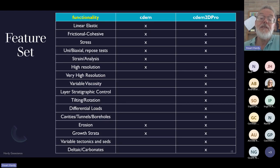The feature set - where this is the bells and whistles version, this is the desktop version. Rheology wise, linear elastic which is not cohesive, we can extract stress. Uniaxial, biaxial tests, repose from both strain and analysis. If you look at this, it's actually done on the desktop because that's where you typically would like to examine your data. High resolution can be on both. Very high resolution for the moment is on the headless version. We can look at viscous materials. Really detailed stratigraphic control for the moment is here. We can do tilting, differential loads, cavities, tunnels and boreholes, erosion, growth strata on both.